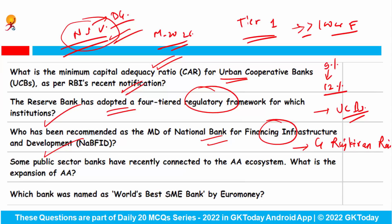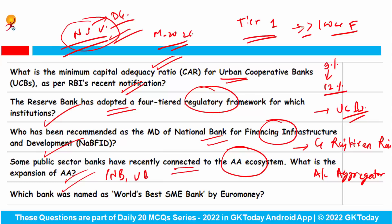Some public sector banks have recently connected to the Account Aggregator ecosystem. What is the full form of AA? Account Aggregator. Many banks have connected to AA — for example, Punjab National Bank, Union Bank of India, Canara Bank, and Indian Bank. The State Bank of India, Bank of Baroda, and UCO Bank are now in a testing phase to connect to the AA ecosystem.